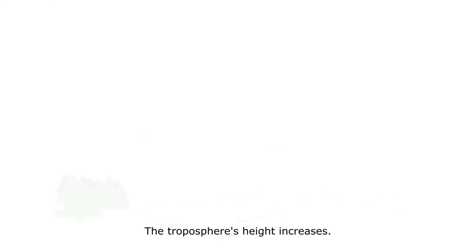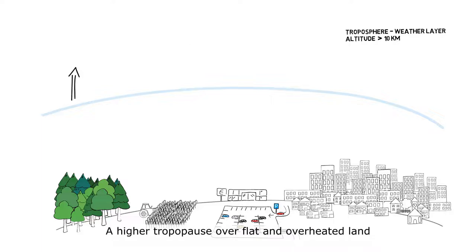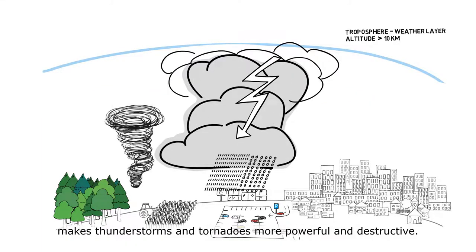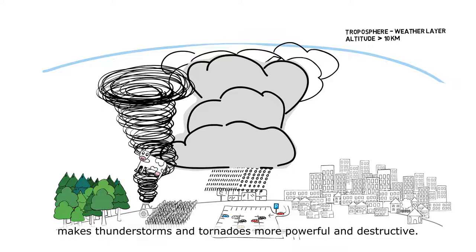The troposphere's height increases. A higher tropopause over flat and overheated land makes thunderstorms and tornadoes more powerful and destructive.